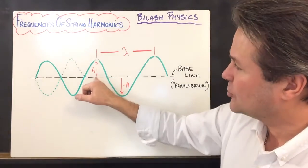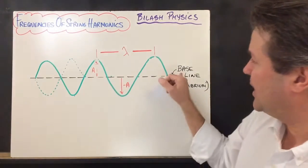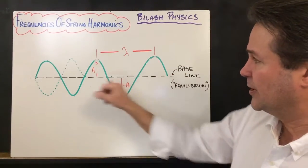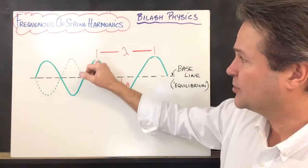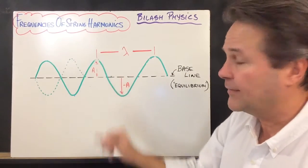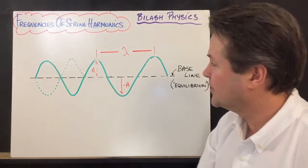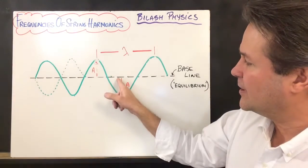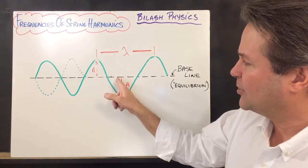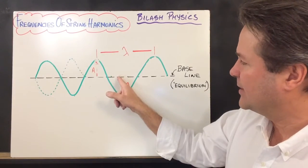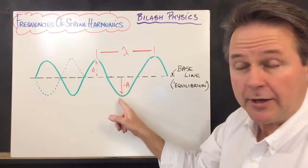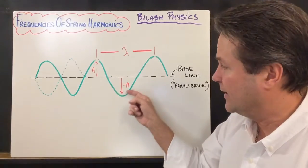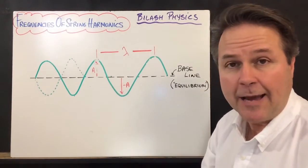So the green line, suppose it's going from left to right, the dotted line would be going from right to left, because that would be the reflected wave. The amplitude measures from the baseline, also called the equilibrium, up to the top of the crest. We can also measure the amplitude from the baseline to the bottom of the trough, and we would refer to that as the negative amplitude.